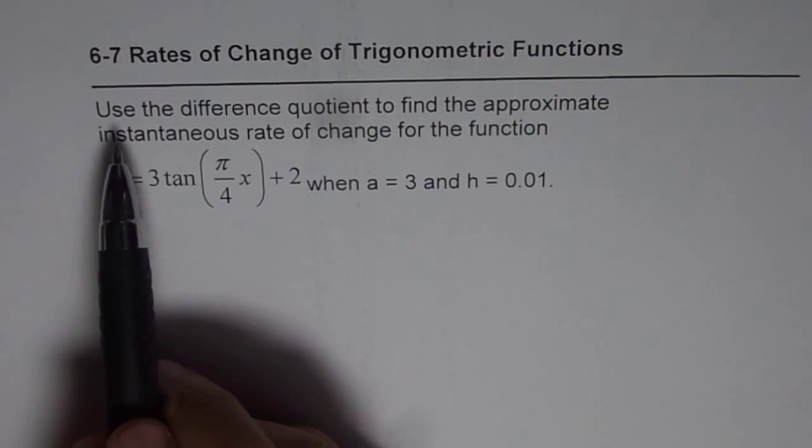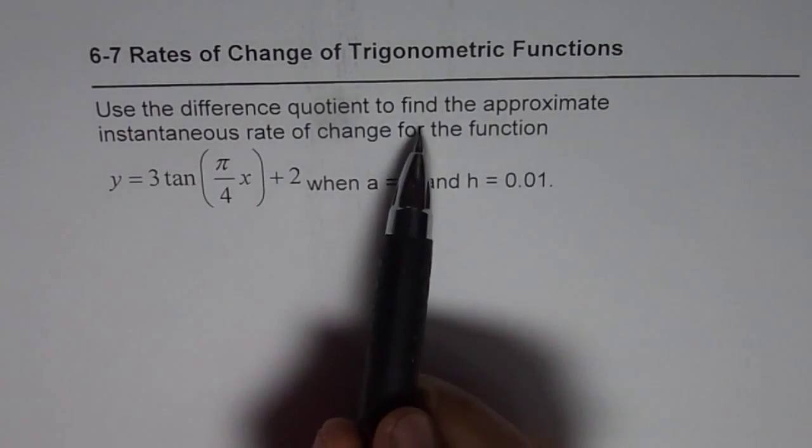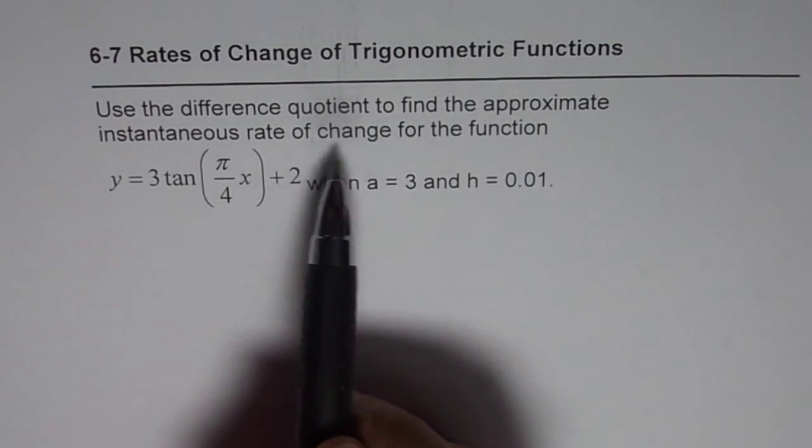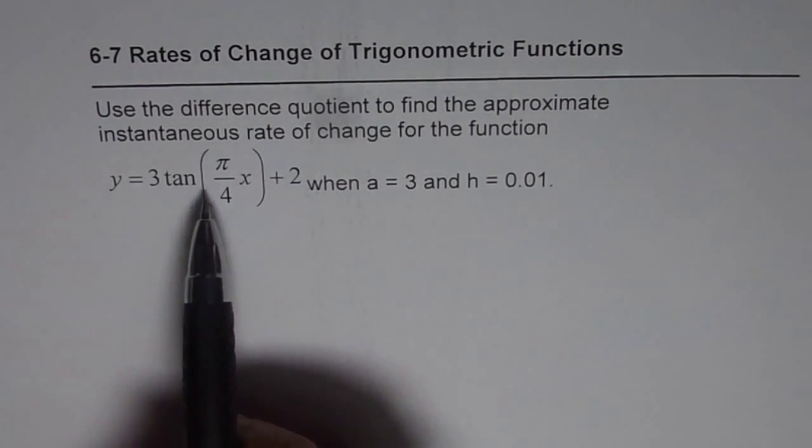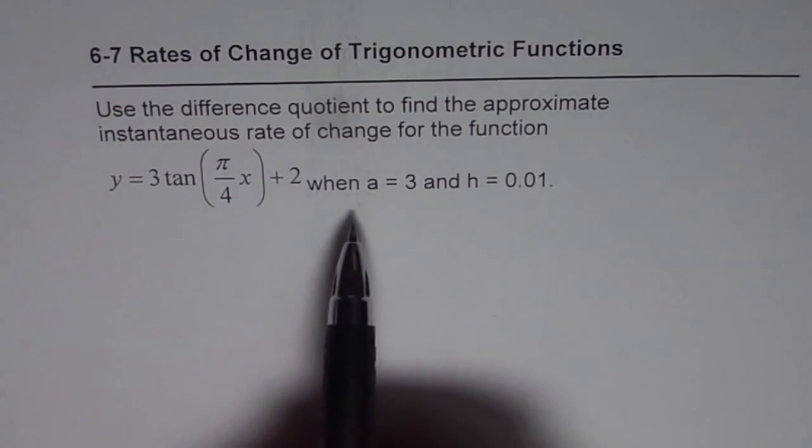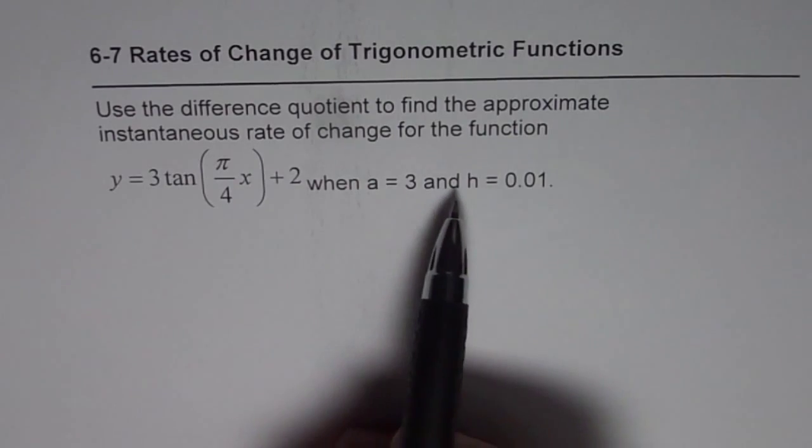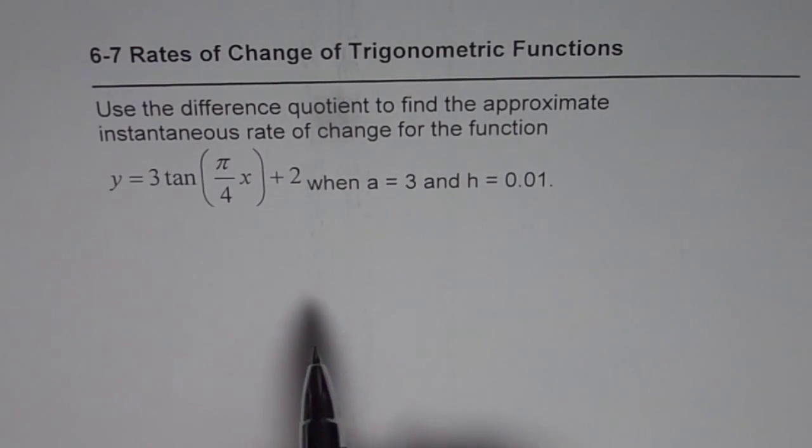Question is, use the difference quotient to find the approximate instantaneous rate of change for the function y equals 3 tan(π/4 x) plus 2 when a equals 3 and h equals 0.01.